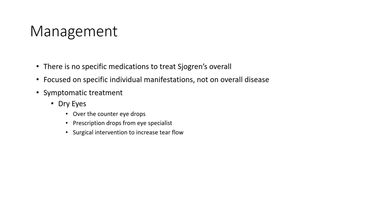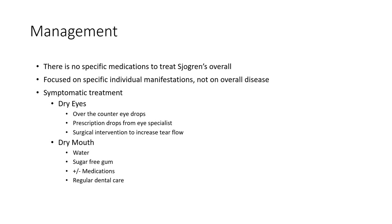For dry eyes, it's often recommended to use over-the-counter eye drops. Sometimes seeing an eye specialist — an ophthalmologist or optometrist — for prescription drops may be necessary, and sometimes surgical interventions to increase tear flow can be recommended. For dry mouth, drinking water is a good thing, and drinks without sugar are preferred as sugar can affect the teeth and cause cavities. Sugar-free gum to keep saliva going is helpful. Regular dental care — seeing a dentist every six months — can be really beneficial.